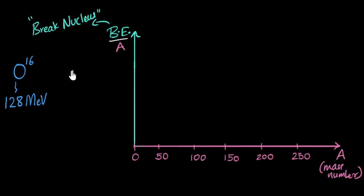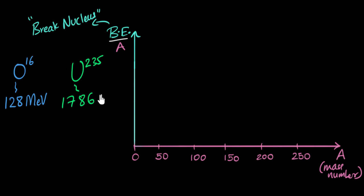Another example: if I were to take uranium-235, a very famous isotope used in bombs and nuclear reactors, then its binding energy happens to be 1786 mega electron volts. That means if I have to separate all 235 protons and neutrons of the uranium, it takes this much energy. So that's the meaning of binding energy — energy needed to break the nucleus.